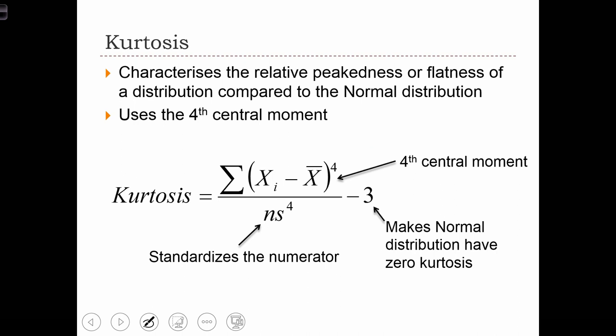Because we have an exponent raised to the power of 4 on top and all positive terms on the bottom, the kurtosis ratio is always positive. But we subtract 3 from that number to center the kurtosis statistic around 0, so a normal curve has a kurtosis equal to 0.